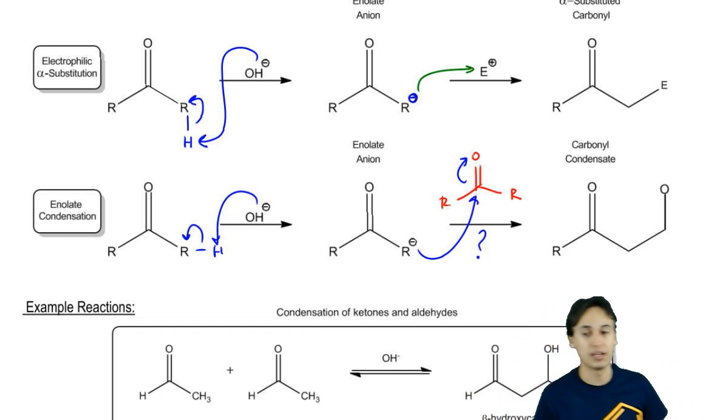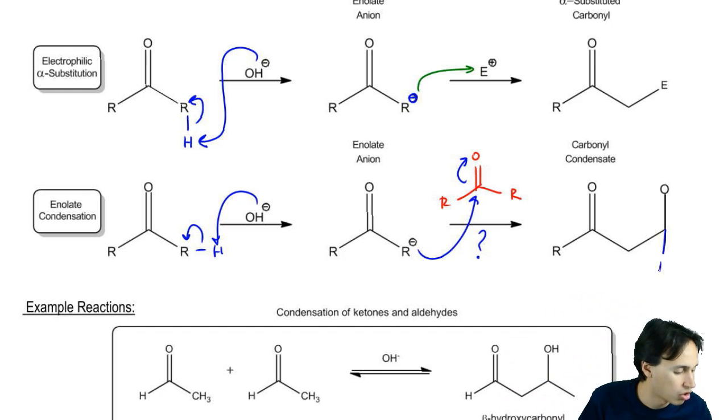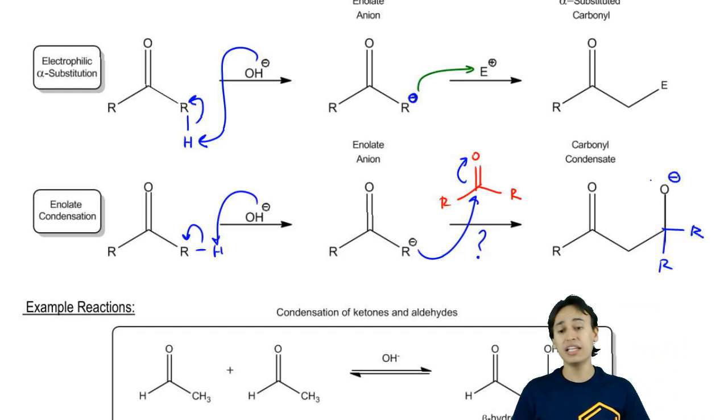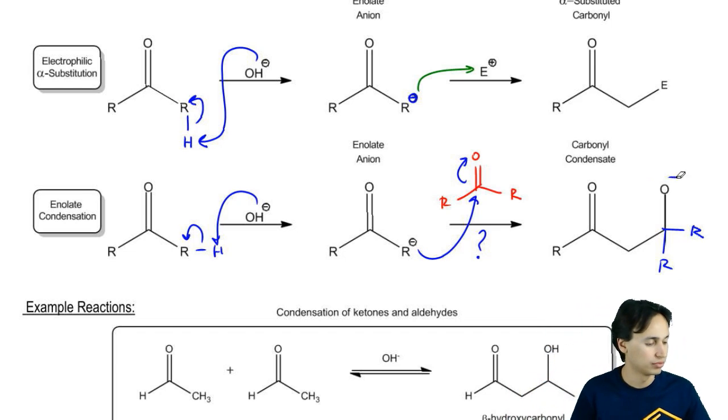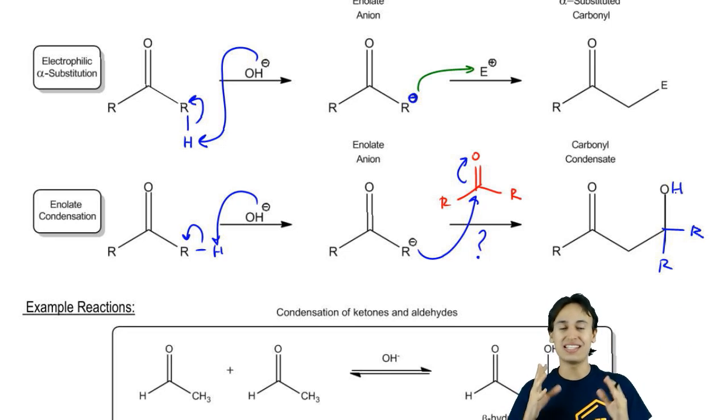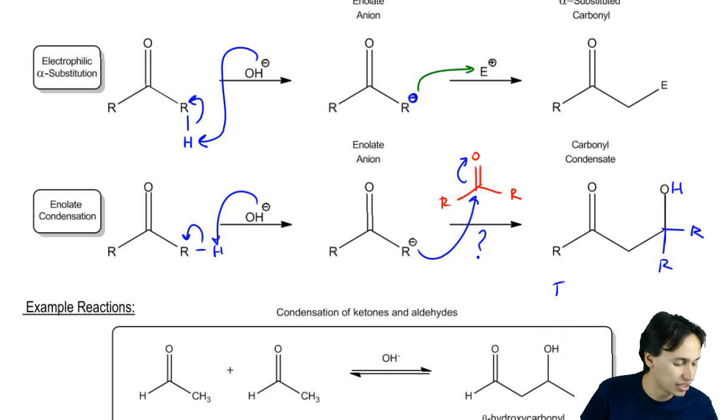Notice what I would get here, just for this tetrahedral intermediate, what I would get is now R here and I would get a negative charge. That negative charge would eventually be protonated. This is the product of enolate condensation.